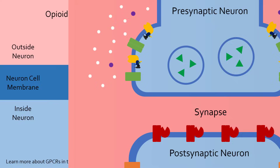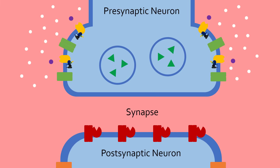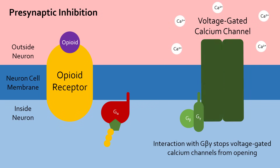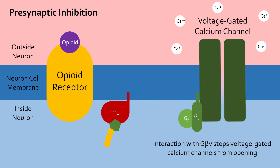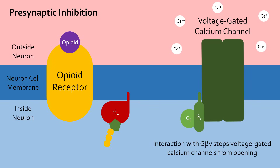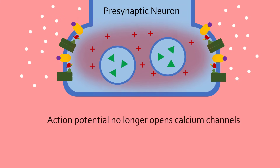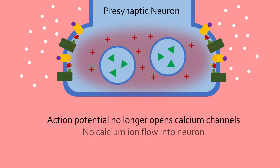In presynaptic inhibition, opioids bind to opioid receptors on the presynaptic neuron terminal. The G-beta-gamma subunit is released and interacts with nearby voltage-gated calcium channels, preventing them from opening. Now, even when there is an action potential, these channels can no longer open. Without calcium influx, no neurotransmitters are released.